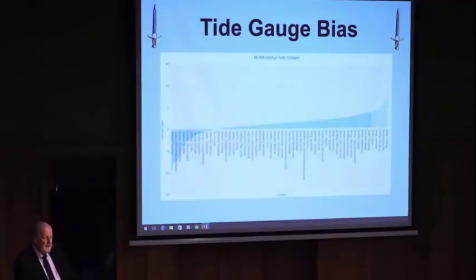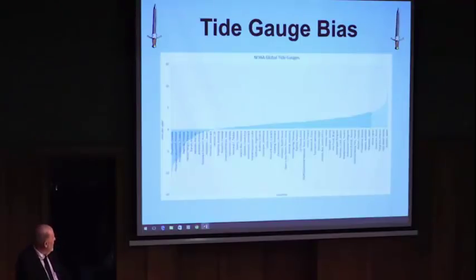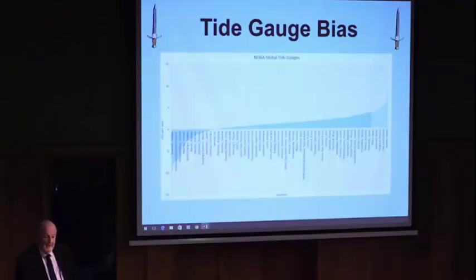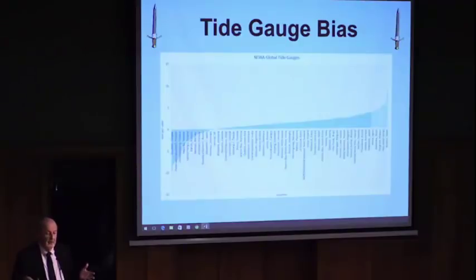This shows you the bias in tide gauges. People put tide gauges where sea level is rising or their land is sinking, so you're taking tectonics into effect. Here are the places where sea level is, quote, falling — because land is rising. Down here you have subsidence and many more tide gauges. So if you take the average of all of these, of course it's going to show sea level is really rising.